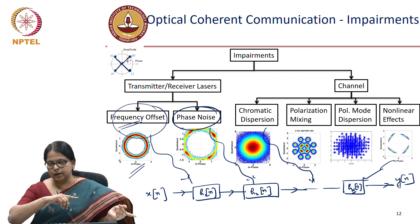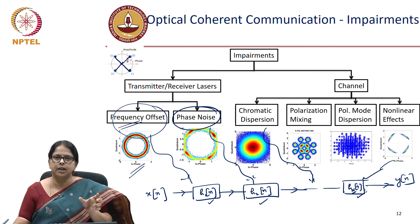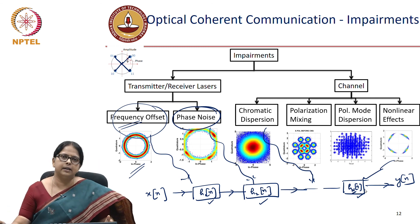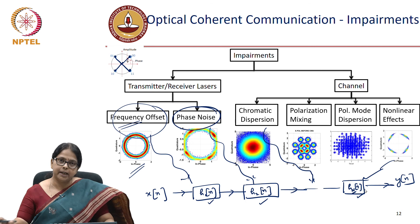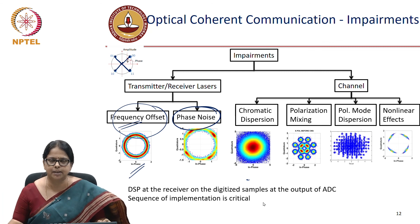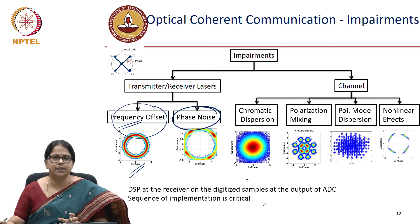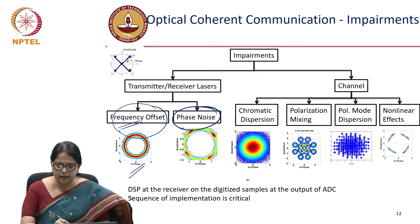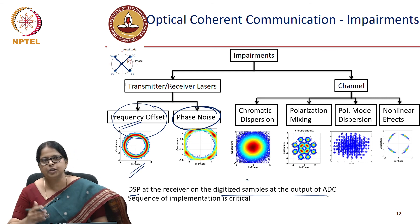In an actual transmission system, all these compensations have to be done at a scale that is really, really fast so that there is no latency, and all of this signal processing is done on the digitized samples at the output of the ADC. The sequence of implementation of these filters is very critical.